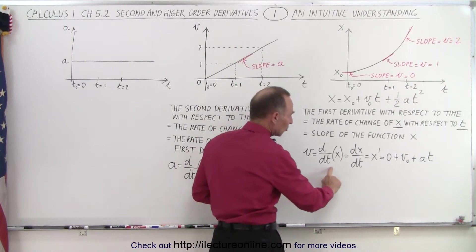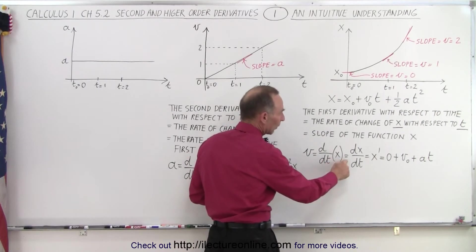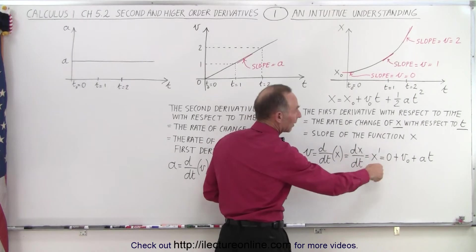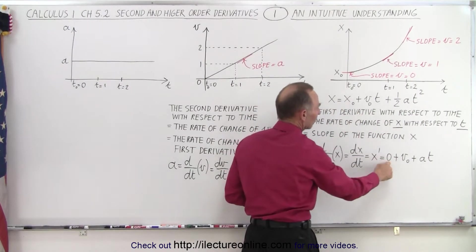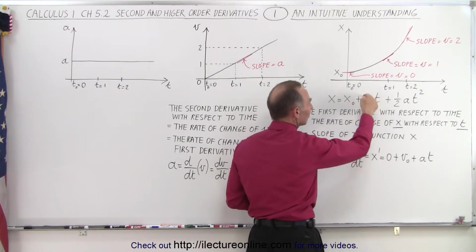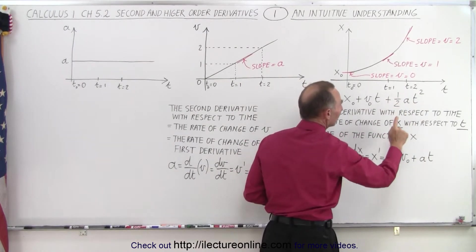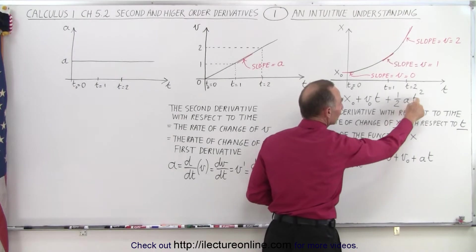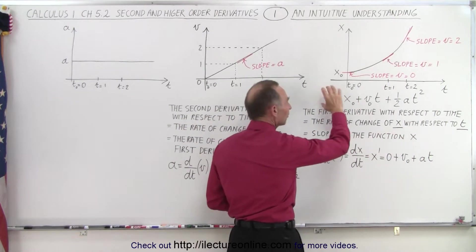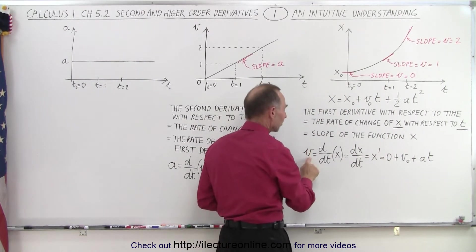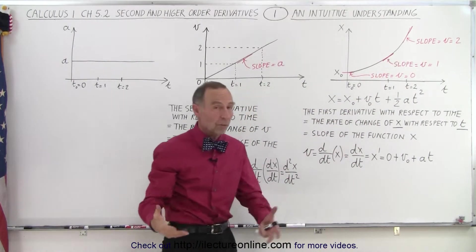This is the notation we use for the first derivative. The derivative with respect to time of x — we write that as dx/dt or x prime. Taking the derivative: the derivative of the constant is zero; the derivative of v-sub-naught times t gives v-sub-naught, since v-sub-naught is a constant; and here we get two times one half, which is one, times a, a constant, times t to the first power — so simply plus at. This first derivative of x with respect to time gives us the velocity, which equals the slope of that function, and by definition the slope is the first derivative.